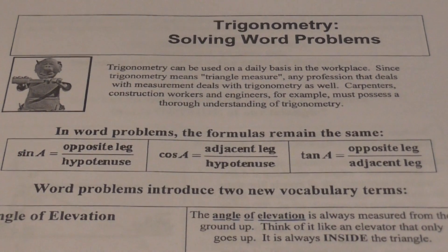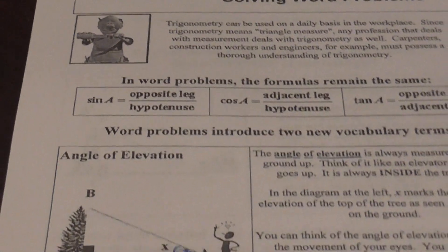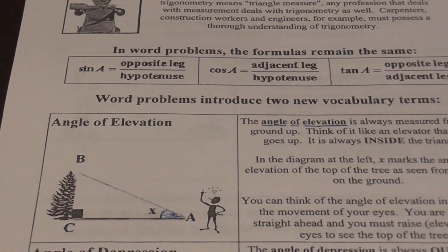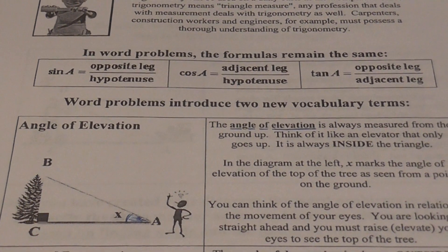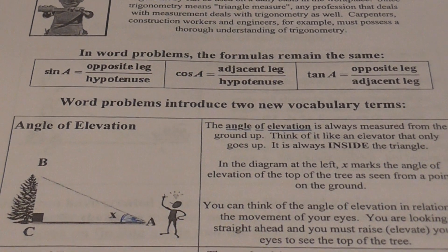But word problems introduce two new vocabulary terms. First one is the angle of elevation. And what the angle of elevation is, it's always measured from the ground up. Think of like an elevator that only goes up. It's always inside the triangle.